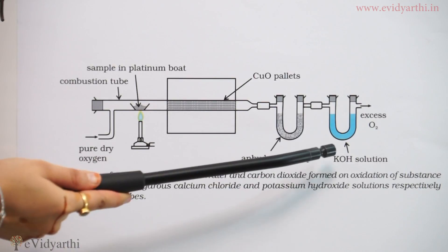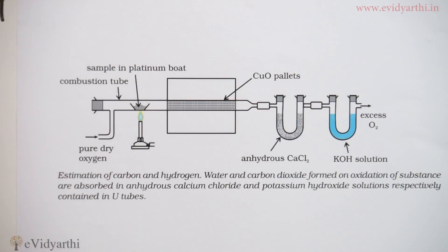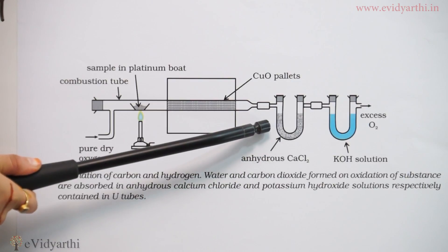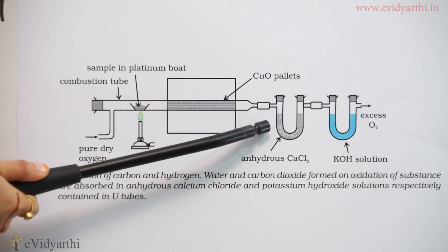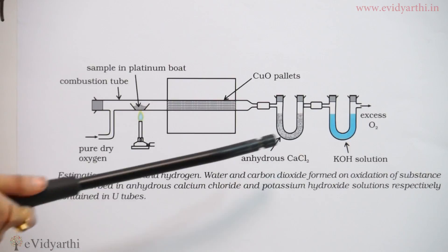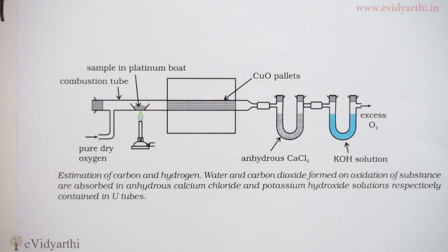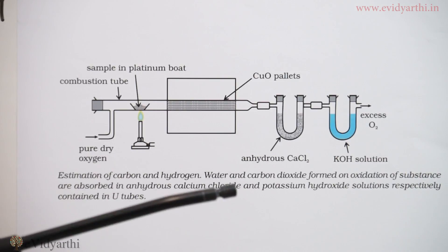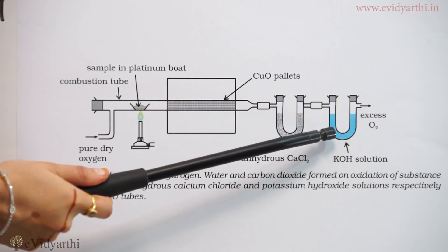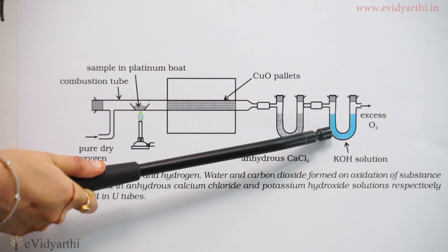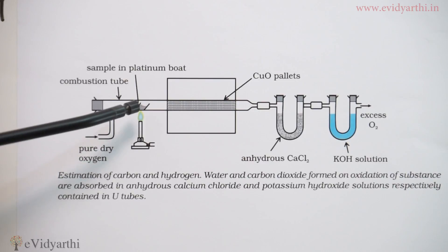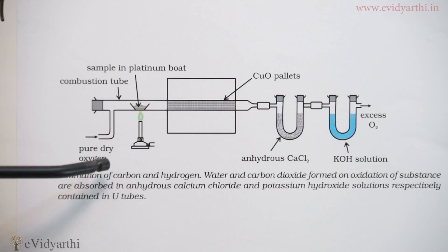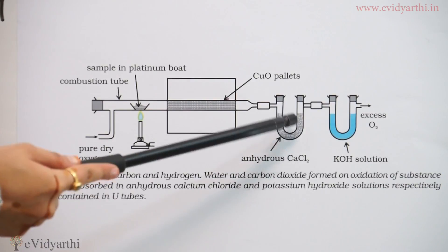There are two U-tubes connected in series. The first U-tube contains anhydrous calcium chloride. If hydrogen is present in the compound, it will be oxidized to water, and that water will be absorbed in this anhydrous calcium chloride U-tube. If carbon is present in the compound, carbon dioxide will be released due to the oxidation of carbon, and that carbon dioxide will be absorbed in the second U-tube which contains the strong KOH (potassium hydroxide) solution.